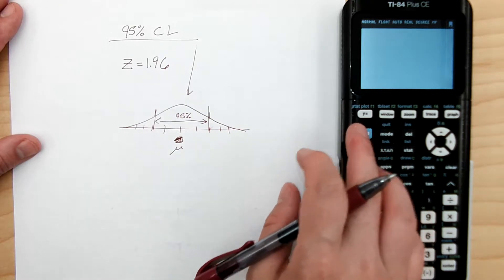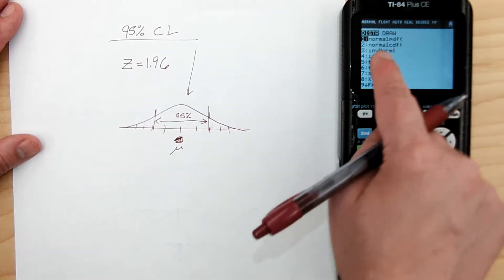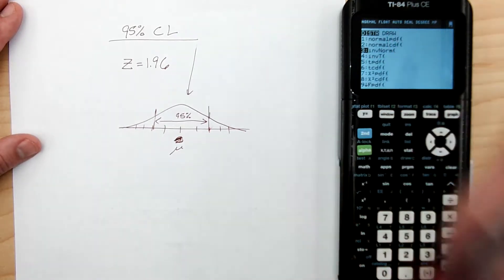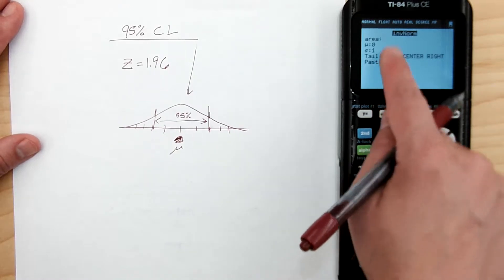So what I'm doing is I'm going to go to the distribution button, second distribution, and we're going to use the inverse normal. Now the inverse normal, if you have a new operating system on your 84 or your 83, you'll have this prompt area,